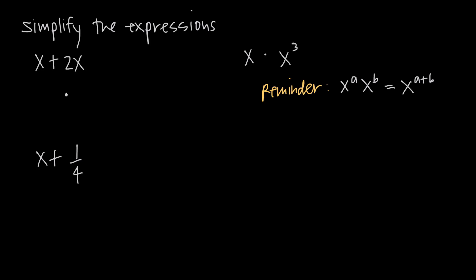The first expression we have here is x plus 2x. We know that we have 1x here — there's this understood 1. So 1x plus 2x is going to give us a total of 3x. We added 1x to 2x and we got 3x, because we have this understood 1 as a coefficient in front of the x. 1 plus 2 gives us 3, so we have 3x.